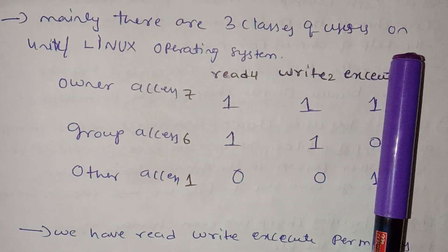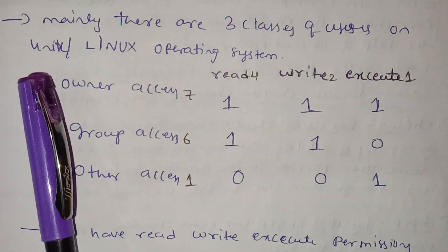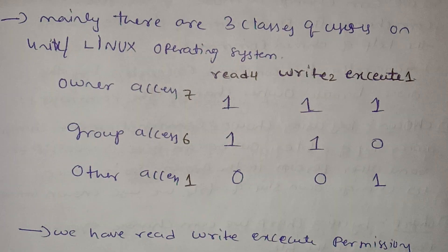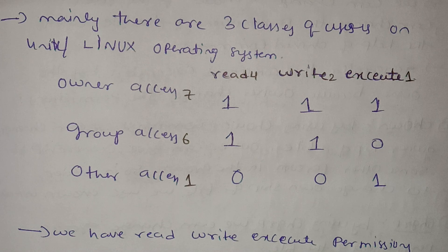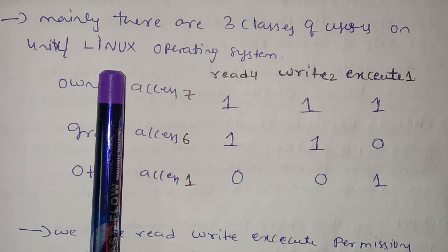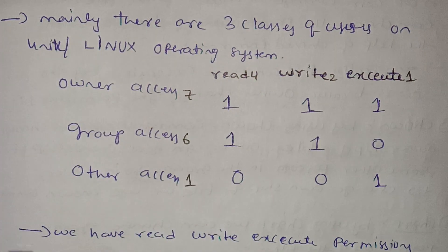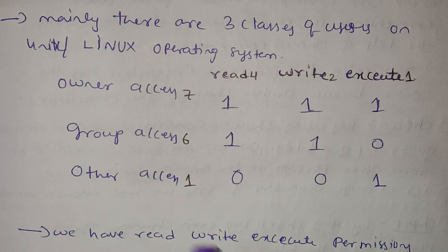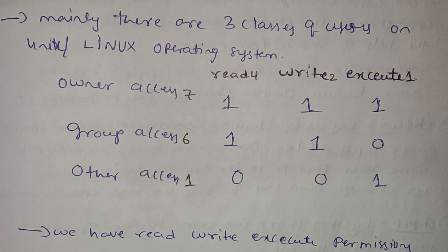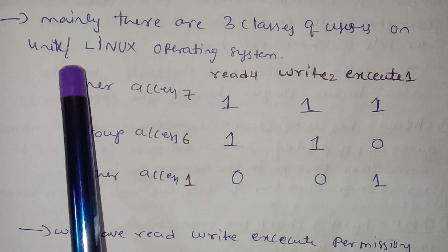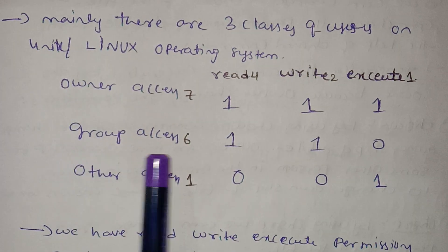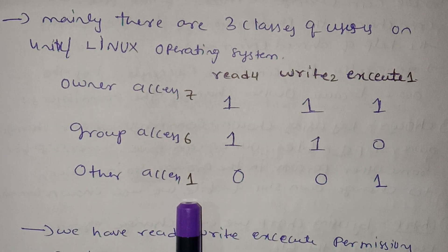In Unix and Linux operating systems, we use three classes: owner access, group access, and other access.